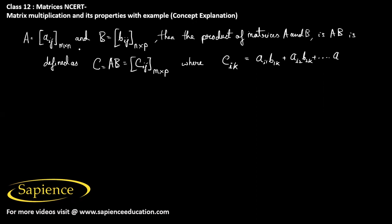There are n columns in matrix A, which is also equal to the number of rows in matrix B, giving A_in times B_nk. So C_ik can be written as the summation of A_ij times B_jk, where j goes from 1 to n.